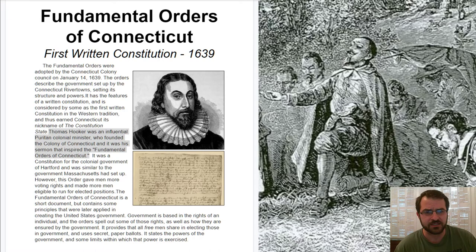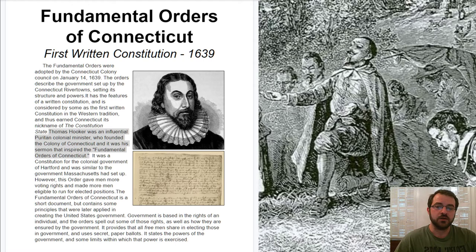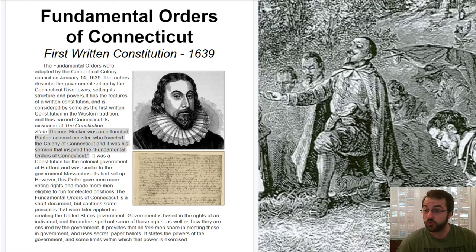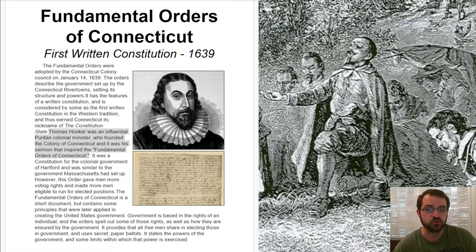Hooker wanted to leave the Massachusetts Bay colony because he believed the government needed limitations — it needed to not be so nebulous and able to do whatever it wants. So he and the settlers created the Fundamental Orders of Connecticut, which created a legislative body — a group of representatives the regular people would vote for. They would be part of this representative assembly that would vote on things and make decisions. So you, the regular person, had control over your own lives because you controlled who got to make the laws.